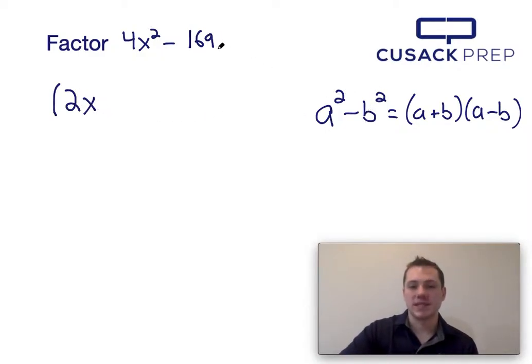And if b squared is 169, taking the square root of both sides, I can see that b would just be 13.